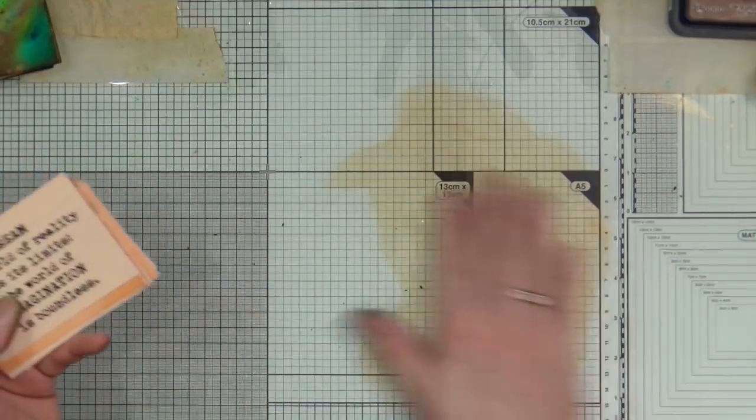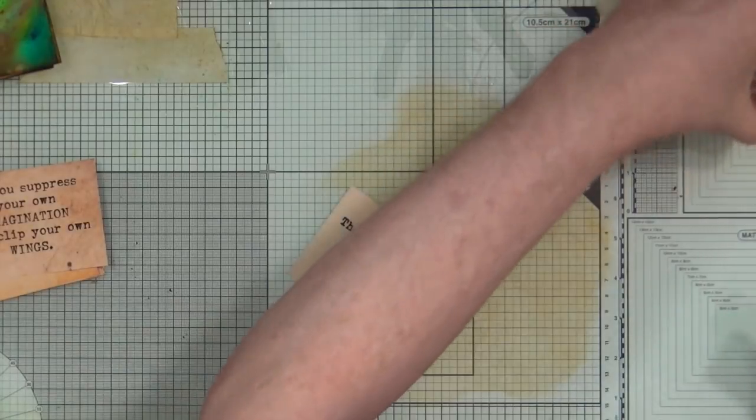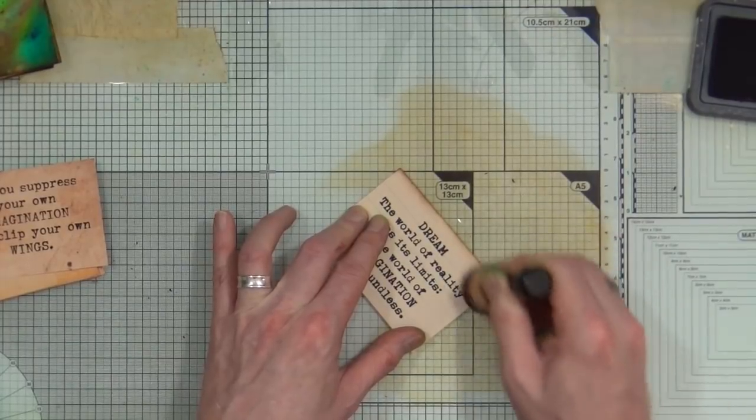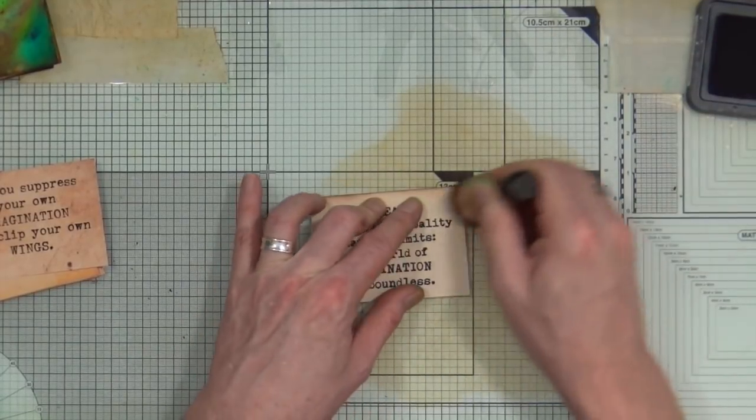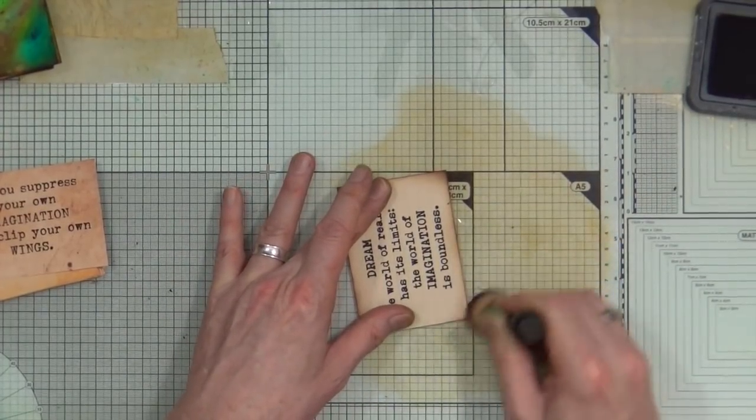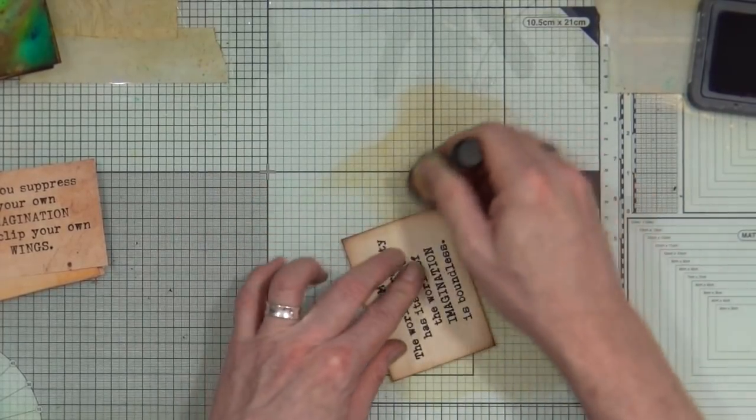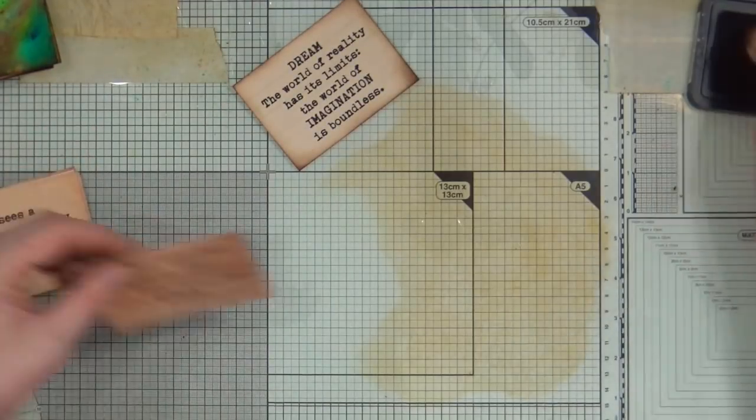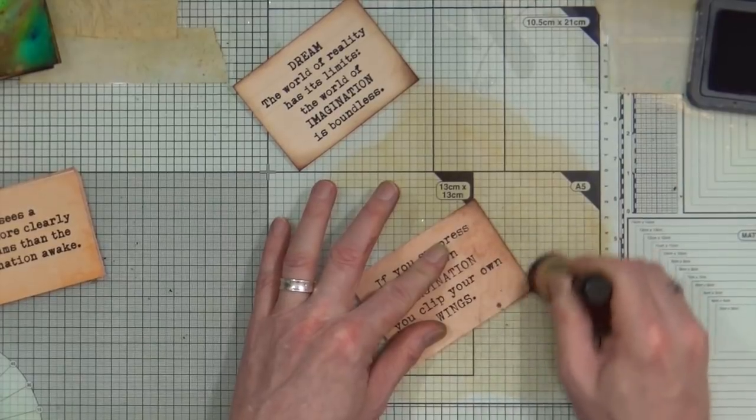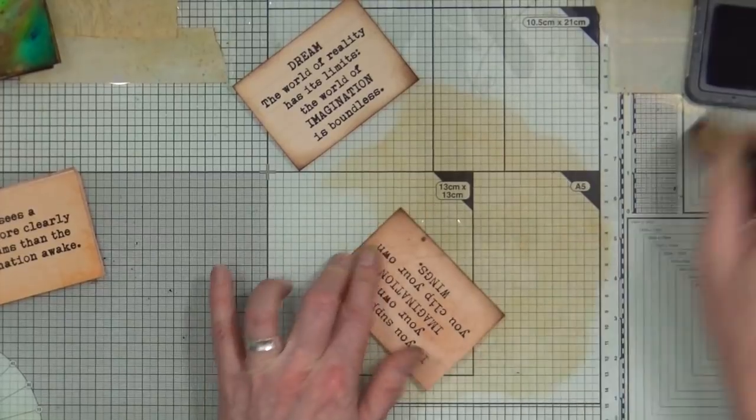I now have to choose ten of these, and do the same thing. So I'll just grab that first one, and again I'm going to go around each one and just distress all of the edges, add distress ink all the way around. And I need ten of these doing, so now you've seen me do the couple, I will do the other eight.